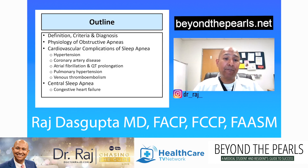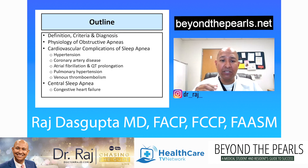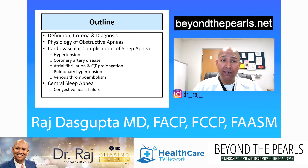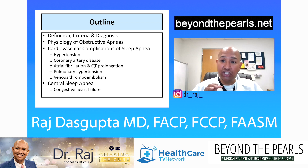Our roadmap for today: I'll start with definitions and criteria for diagnosing obstructive sleep apnea, then how we make the diagnosis, and then physiology. I'll focus on the most common type, OSA — obstructive sleep apnea. The biggest chunk will be cardiovascular complications: high blood pressure, coronary artery disease, arrhythmias, pulmonary hypertension, and data about DVTs and pulmonary embolism. I'll finish with central sleep apnea and congestive heart failure.